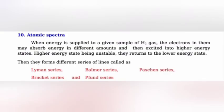Atomic spectra: When energy is supplied to a given sample of H2 gas, the electrons in them may absorb energy in different amounts and then get excited into higher energy states. Higher energy state being unstable, they return to the lower energy state. Then they form different series of lines called Lyman series, Balmer series, Paschen series, Brackett series, and Pfund series.